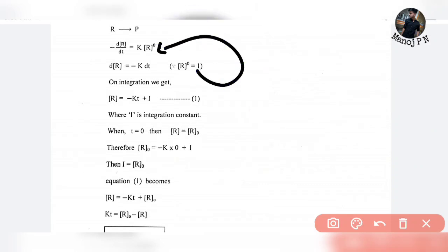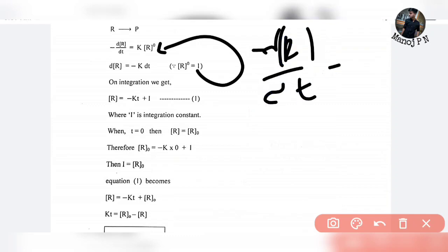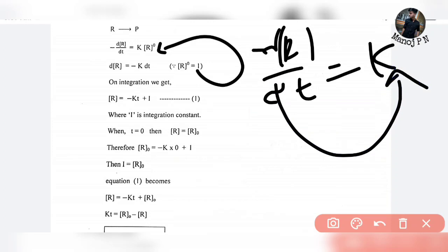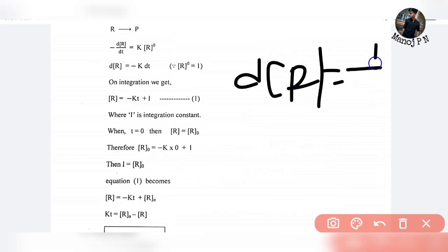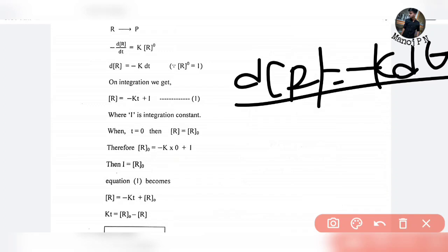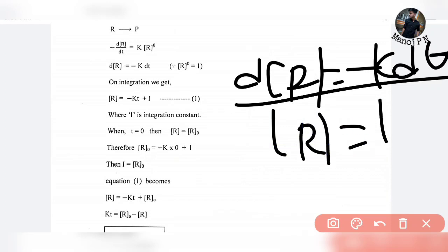Substituting, minus dR divided by dt is equal to k. Rearranging, we get dR equal to minus k dt on the right hand side. Integrating both sides — integrating dR gives R, and integrating minus k dt gives minus kt plus an integration constant i.